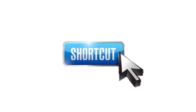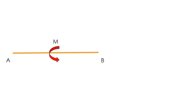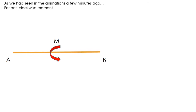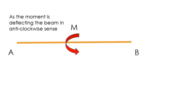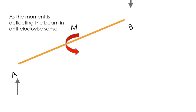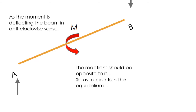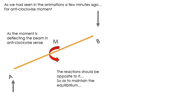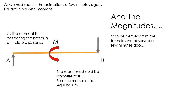Here is the shortcut. For the same beam AB with an anti-clockwise moment, we saw in the animation that the moment deflects the beam in the anti-clockwise sense. The reactions should be in the opposite direction — one force opposing upward and the other downward — to take the beam back to its original position.